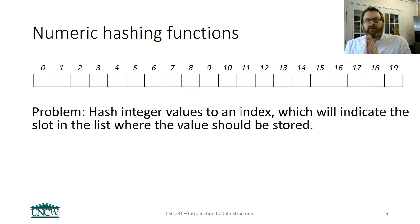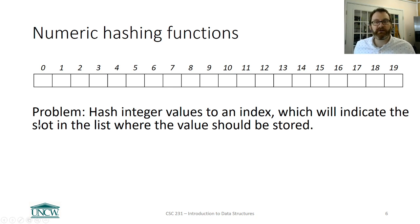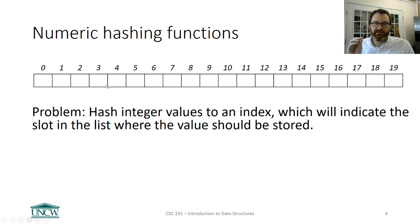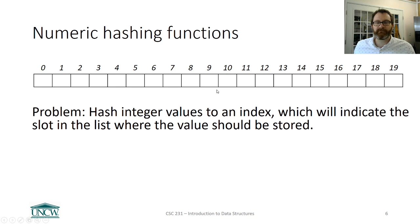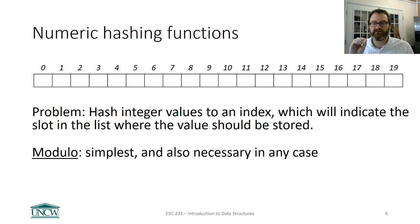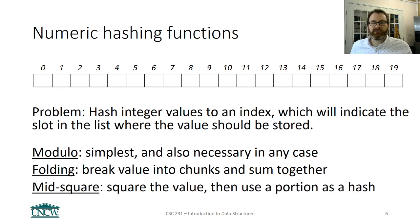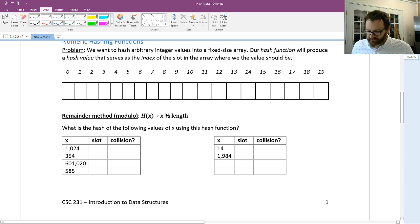So let's go through some examples of numeric hashing functions. We want to create a hash table whose underlying structure is an array-based list. When we want to put something in this list, we need to figure out where it's going to go. We need to define a hash function that takes a value and converts it into one of the slots — slot 0 through 19. We're going to look at three examples: modulo (which is simplest), a folding function, and the mid-square method.